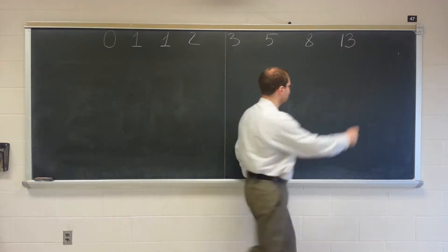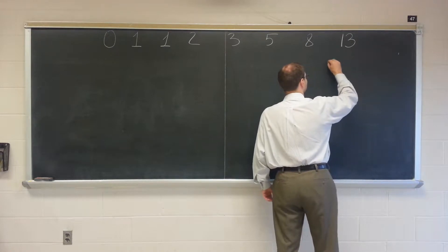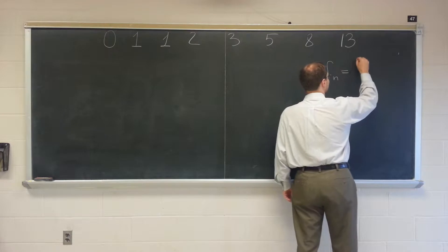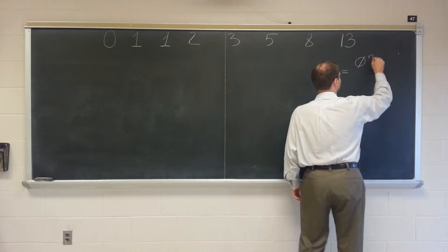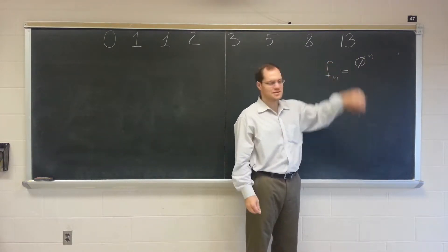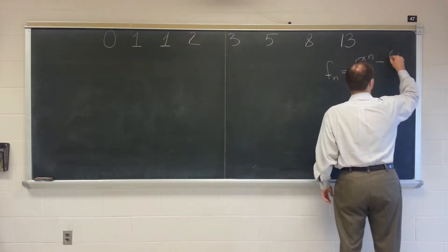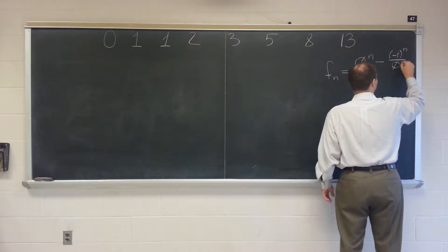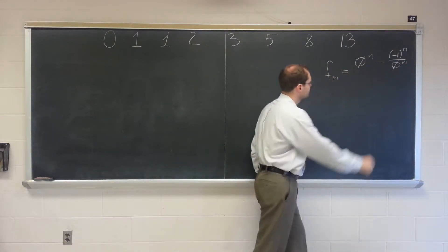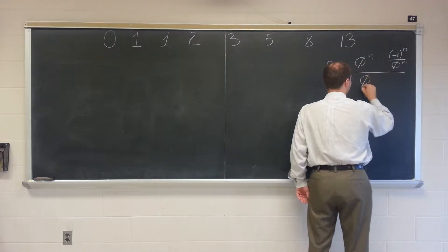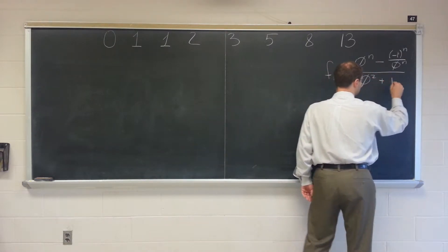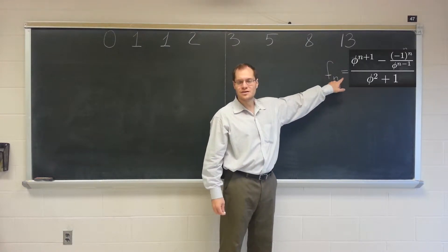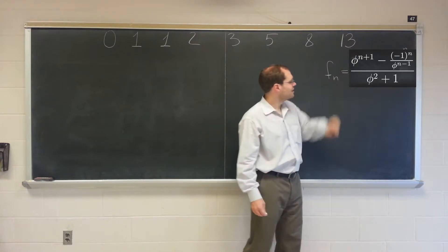But let me show you what the formula will end up being. So the nth Fibonacci number, if I recall correctly, is given as phi to the nth power, where phi is the golden ratio. I believe minus one to the nth power divided by phi to the n, divided by phi squared plus one. So that's the closed-form formula for the nth Fibonacci number.